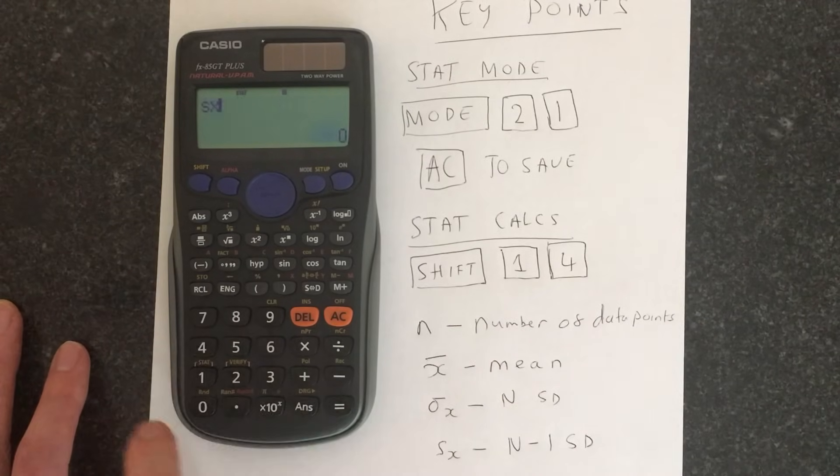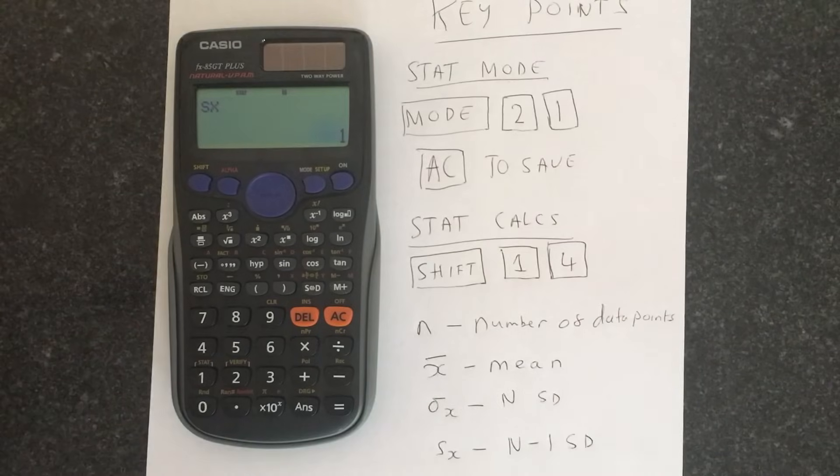So we just press for example 4 and then equals, we get the standard deviation which when divided by N minus 1 is of course going to give you 1.